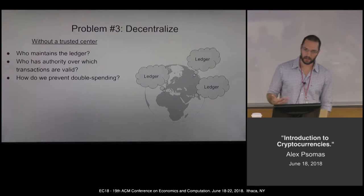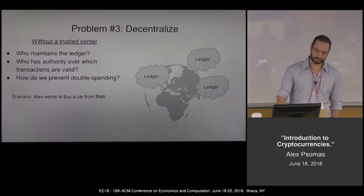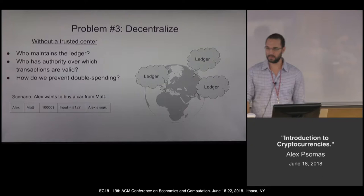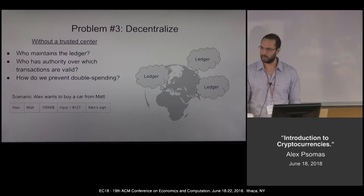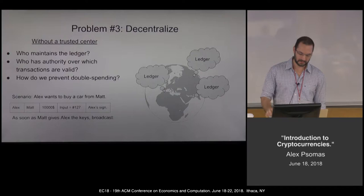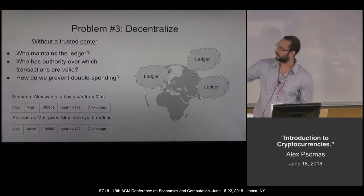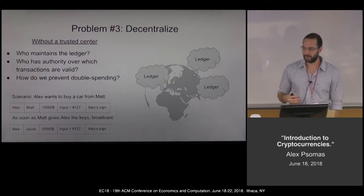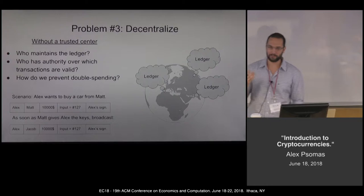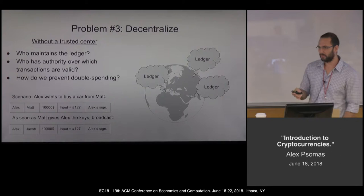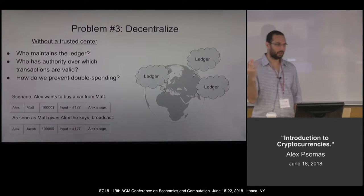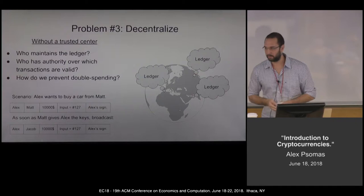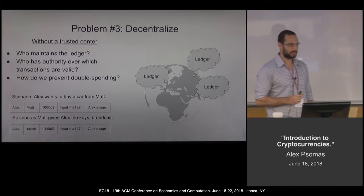Here's a scenario that is not easy to see how we'd solve. Say I want to buy a car from Matt. We agree on a price and broadcast the transaction 'Alex gave Matt ten thousand dollars' with a signature. Everything's good, the transaction is written down. Now, the moment I get the keys, I broadcast the same money to Jacob — literally the same money, with the same input. This cannot happen with actual dollars because Matt will have them in his hands. This cannot happen with a bank because I'd have to convince the bank to erase the previous transaction — and because we trust the bank, the bank will not do this. But in a decentralized world without a trusted center, how would you solve this problem? This is the key problem.